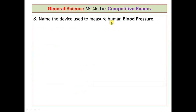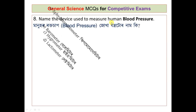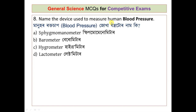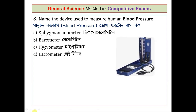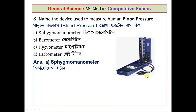Question number 8: what is the name of the device used to measure human blood pressure? The options are sphygmomanometer, barometer, hygrometer, and ectometer. The correct answer is sphygmomanometer, which is the instrument used to measure blood pressure.